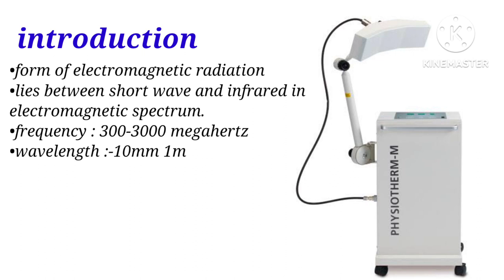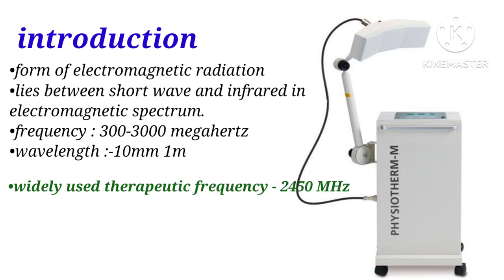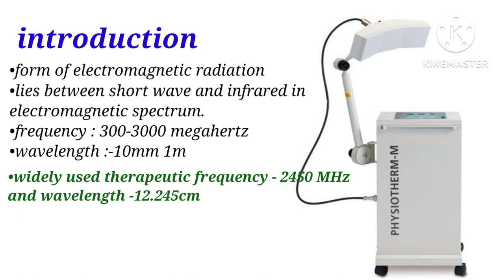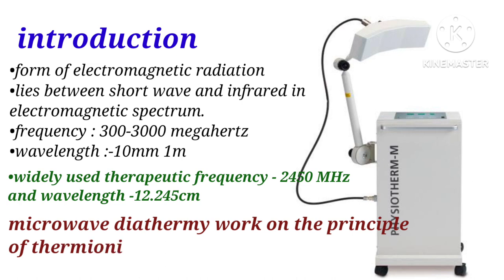The frequency range is about 300 to 3000 megahertz and the wavelength is 10 mm to 1 meter. The therapeutically used frequency is 2450 megahertz with a wavelength of 12.245 cm. Like other electromagnetic radiation, microwave diathermy travels at the speed of light and is governed by the laws of reflection, refraction, absorption, and the inverse square law.